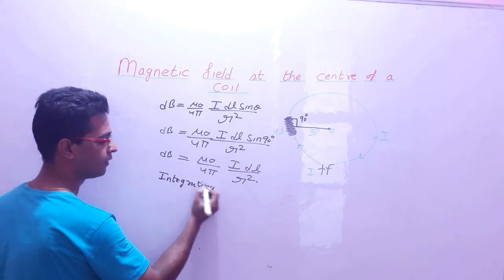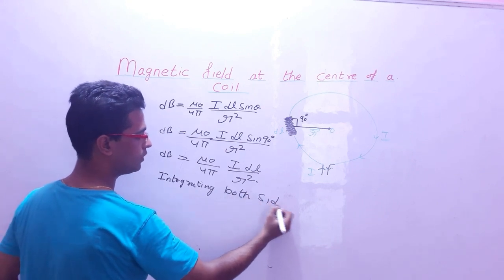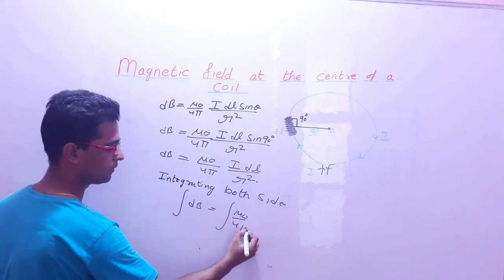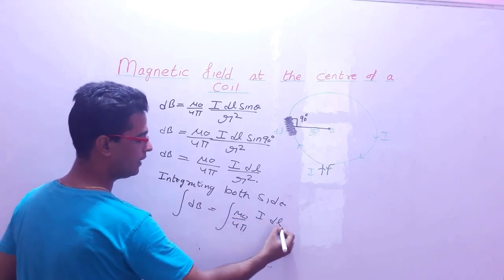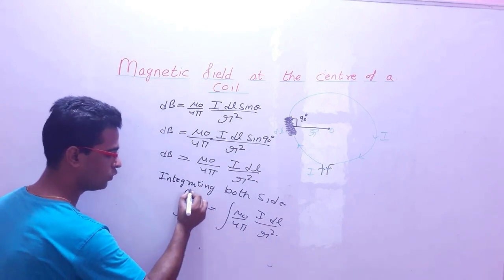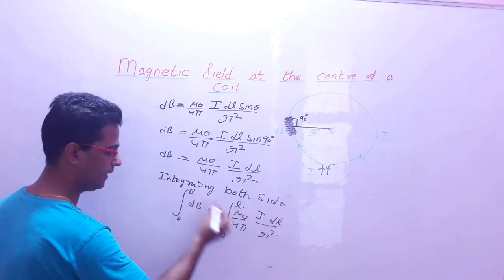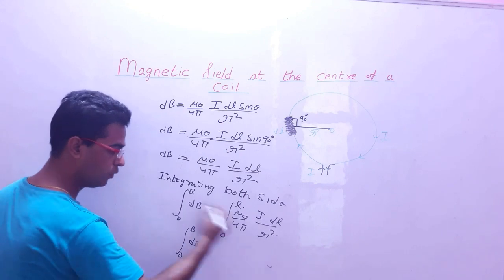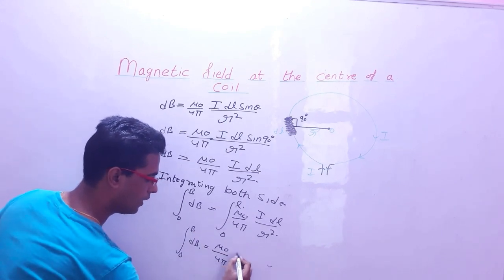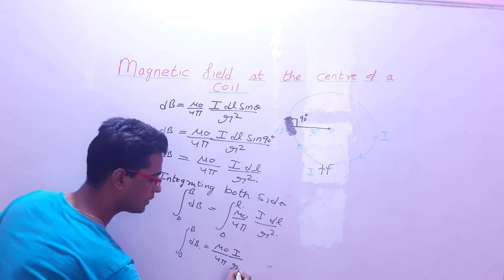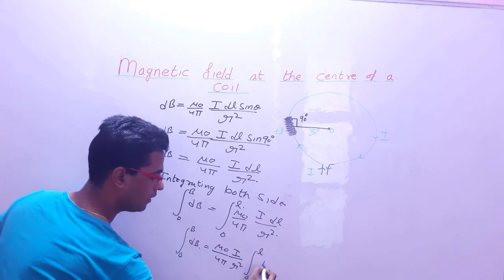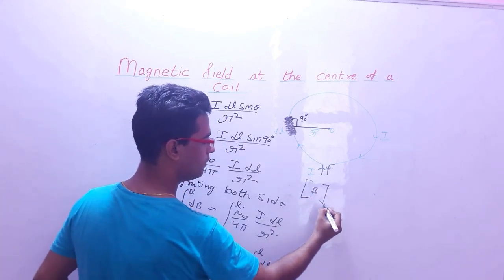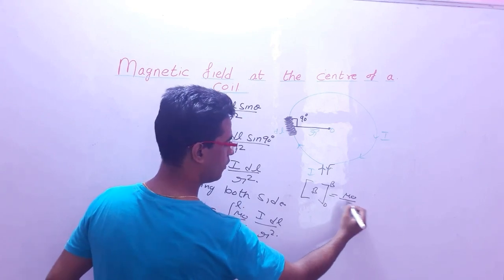Integrating both sides — इधर की तरफ integrate करेंगे, इधर की तरफ भी integrate करेंगे। I·dl / r², limits 0 से l तक। Integration of dB, limits 0 से B तक: μ₀/4π · I/r² को बाहर निकालेंगे।